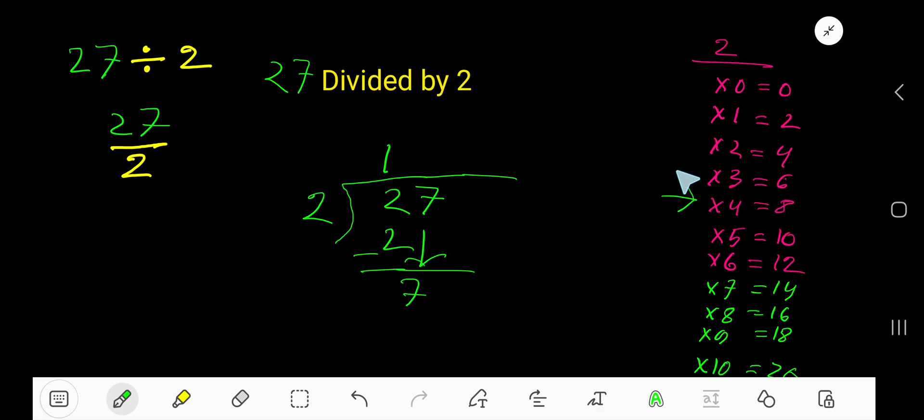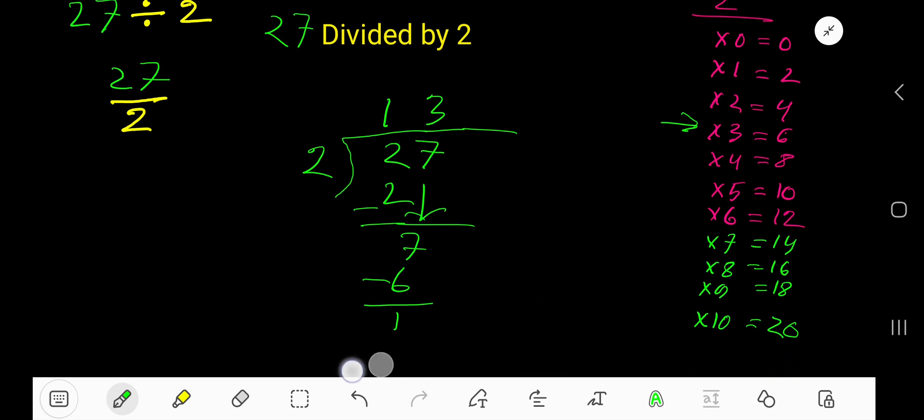greater than 7, so 3 times you have to consider, right? 3 times 2 is 6. If you subtract, then 1. So your remainder is 1. That is, 13 remainder 1 is your answer. But if you want to convert your answer into decimal, just take a decimal point and 0.